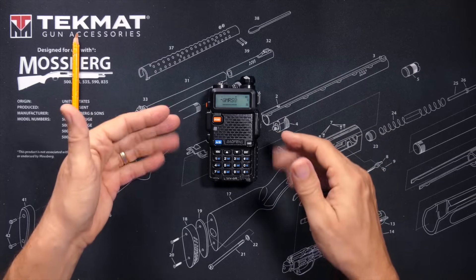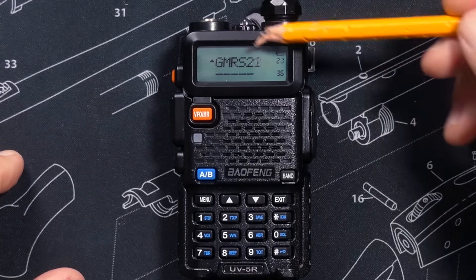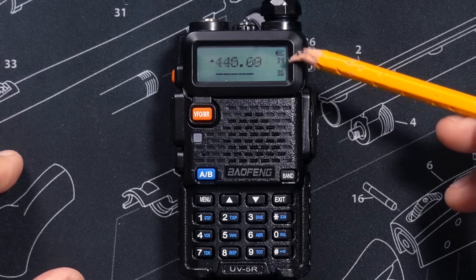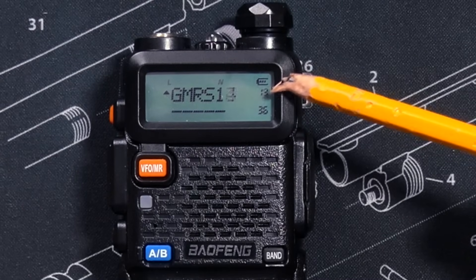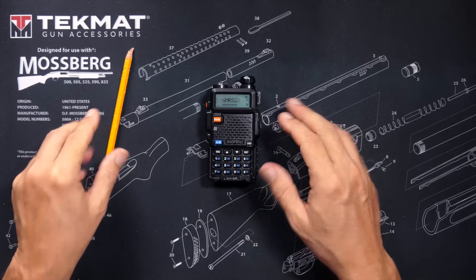After you press the scan button, you can see that the radio is now scanning through my channels. You'll see the channel names whizzing by quickly, as well as the channel numbers, which is the small little number right there on the right. The radio will then continue to scan until it picks up a signal.